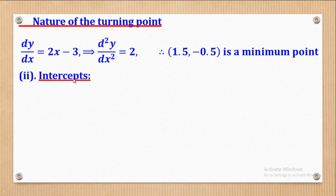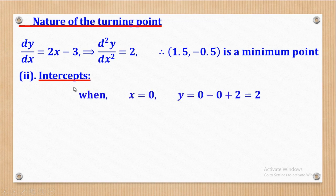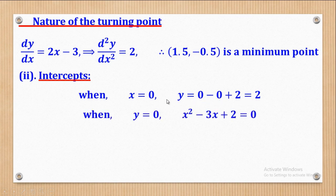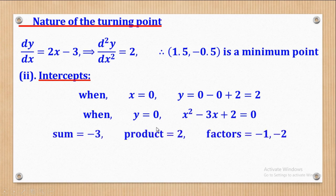Next will be intercepts. Intercepts means you get the value of x when y is 0, and the value of y when x is 0. When y is 0, the whole expression for y will equal 0. In this case, you have to factorize. The sum is -3 and the product is 1 × 2, which is 2. So you have to look for factors whose sum is -3 and whose product is 2.